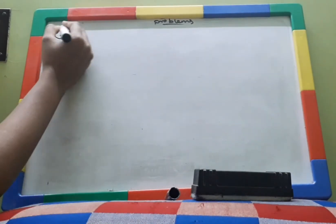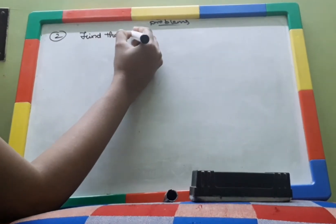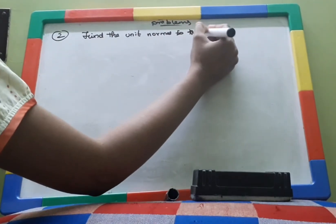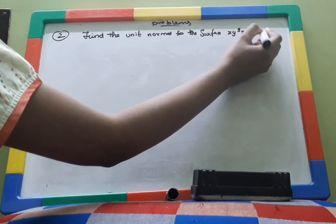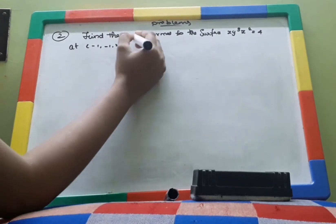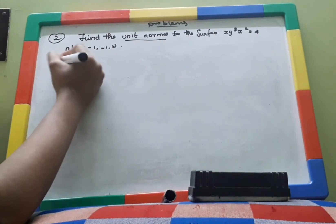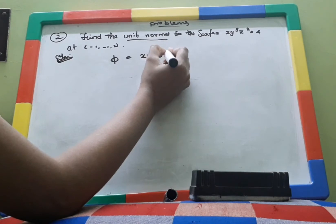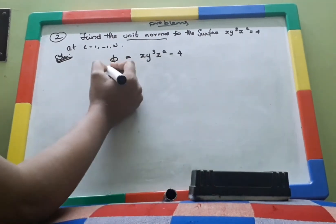Using unit normal vector, we are going to solve the following question: find the unit normal to the surface xy³z² = 4 at the point (-1, -1, 2). We take the surface as ψ, so ψ = xy³z² − 4.